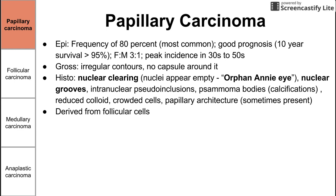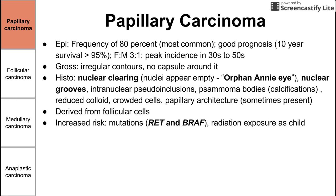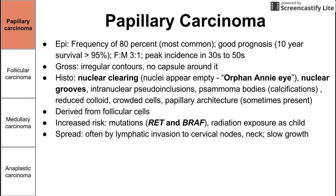Papillary carcinomas are derived from follicular cells, as opposed to the parafollicular cells like medullary carcinomas. There's an increased risk with RET or BRAF mutations, and also with radiation exposure as a child — for example, people who received radiation for acne may be at risk. Papillary carcinoma spreads by lymphatic invasion, often to the cervical nodes in the neck, and it has pretty slow growth, which contributes to its good prognosis.